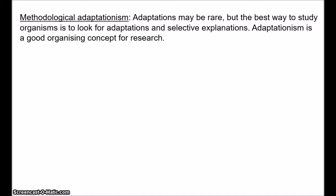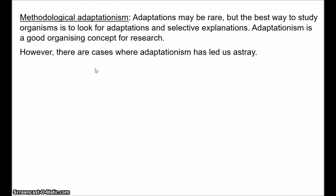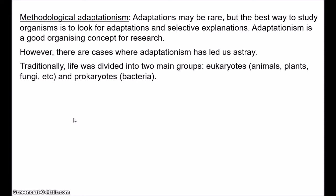Of course, there are still problems with focusing primarily on looking for adaptations. There are cases where adaptationism has led us astray. An interesting example, which became popular after Gould and Lewontin's article was published, is the discovery of the archaea. Traditionally, life was divided into two main groups: the eukaryotes, distinguished by membrane-enclosed organelles — most notably a membrane-enclosed nucleus — which include the animals, plants, fungi, and protists; and the prokaryotes, the bacteria, which are single-celled organisms that do not have any membrane-enclosed organelles.